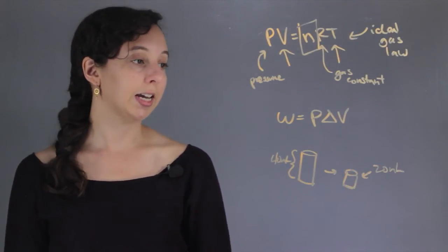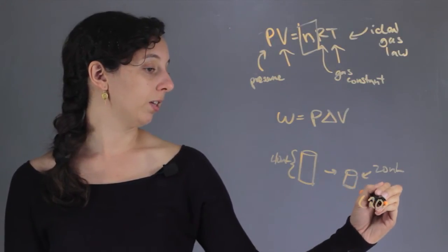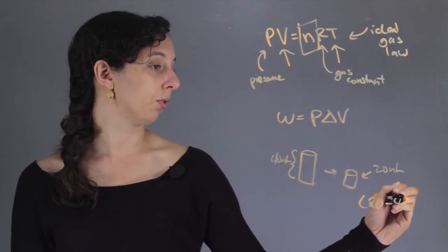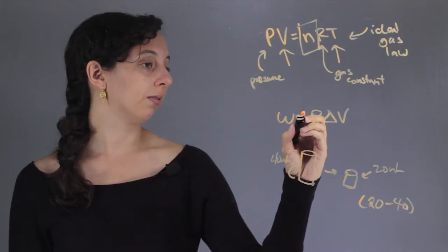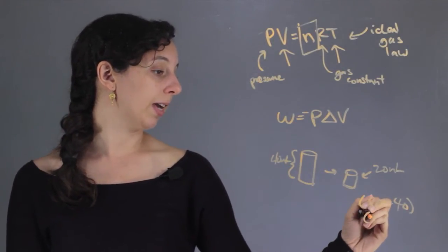Well, our delta V is going to be final minus initial, so 20 minus 40. Remember, this is actually negative. And so our delta V is going to be negative 20.